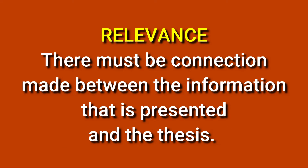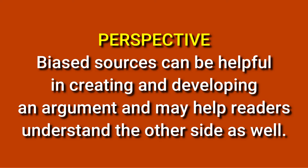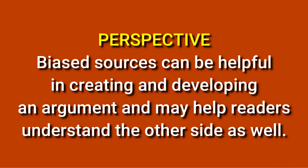R is for relevance. There must be a connection made between the information that is presented and the thesis. The article must be related to the topic. And P is for perspective. Biased sources can be helpful in creating and developing an argument and may help readers understand the other side as well. However, extreme biased sources may give information that is misleading and ineffective for your paper.